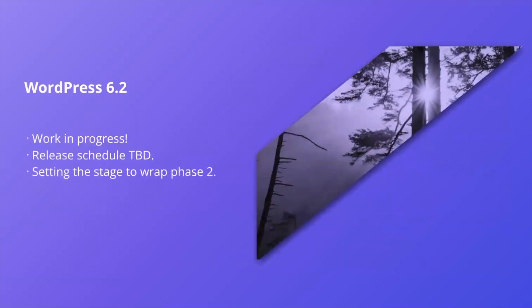Let's look forward. WordPress 6.2 is very much a work in progress. The release schedule is to be determined but should be announced soon. It's setting the stage to wrap up phase two of Gutenberg, which is all about site editing and block themes. Phase three will be collaborative editing, so this is a big release that's coming up.